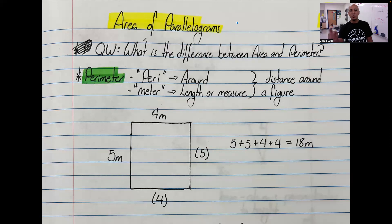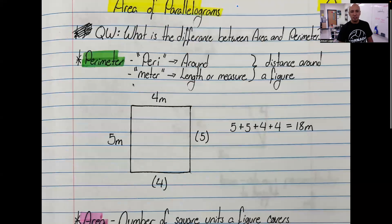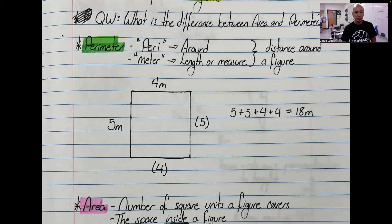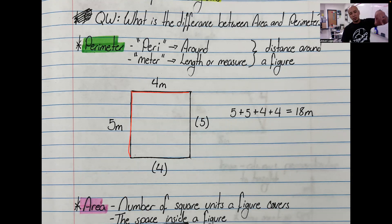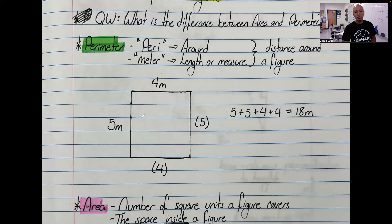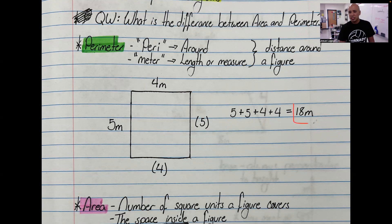If you're given a parallelogram such as a rectangle like this one — four meters by five meters — since we're measuring around we need to measure all four sides: four plus five plus four plus five. The perimeter of this rectangle would be 18 meters.